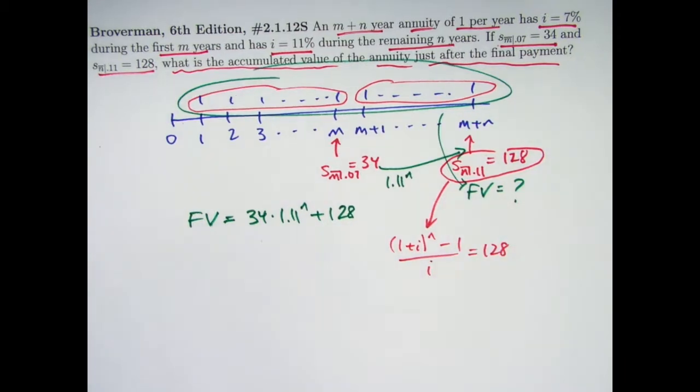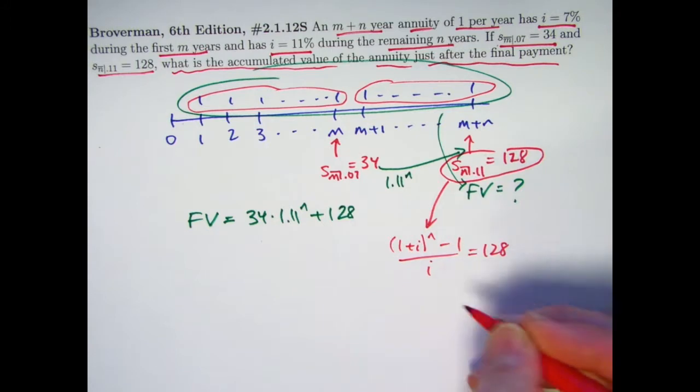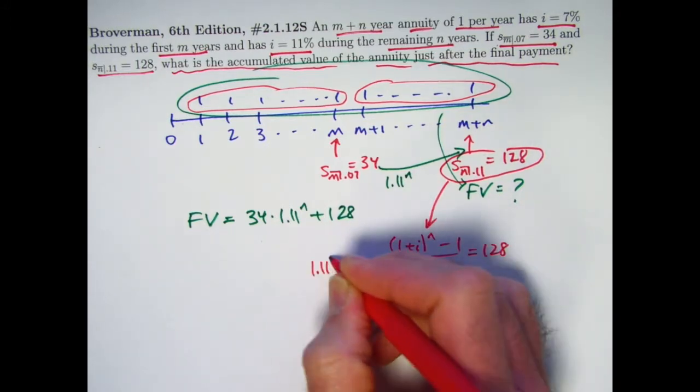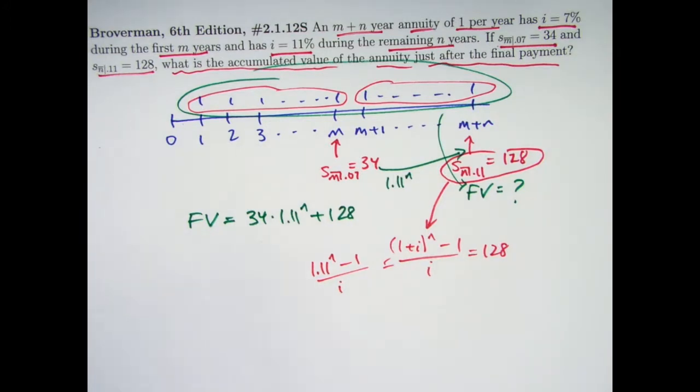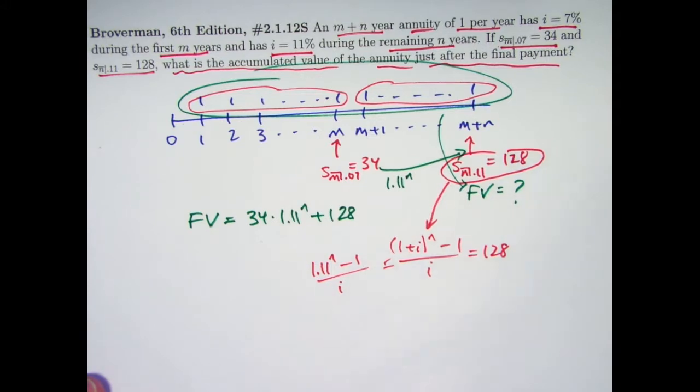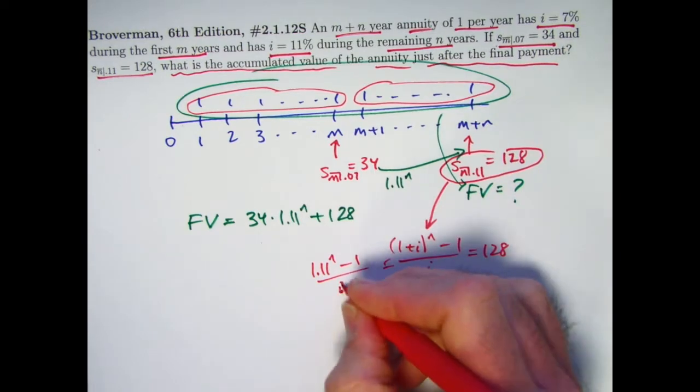I mean, we could solve for N when this 11% interest rate is valid. We could solve that for N, but it's not necessary. All we need is to solve for 1.11 to the N. And yeah, the i down here is also 0.11.